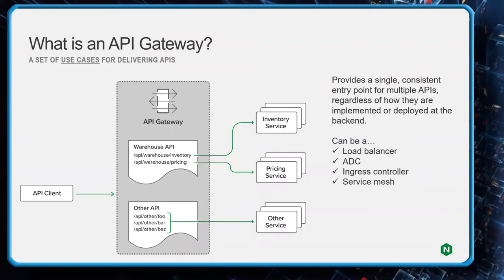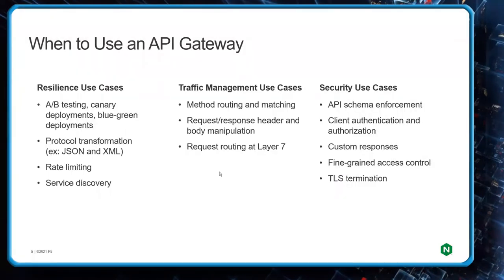The API gateway fulfills a number of different tasks. It shares a lot of DNA with traditional load balancers, traditional application delivery controllers, traditional ingress controllers, and also elements of service mesh, which we'll talk about briefly in a later slide. When would we use an API gateway? Typically, these sort into one of three verticals: resilience use cases, traffic management use cases, and security use cases.